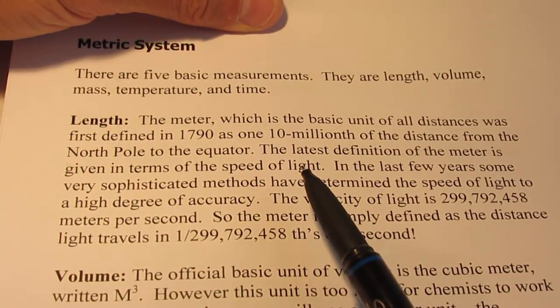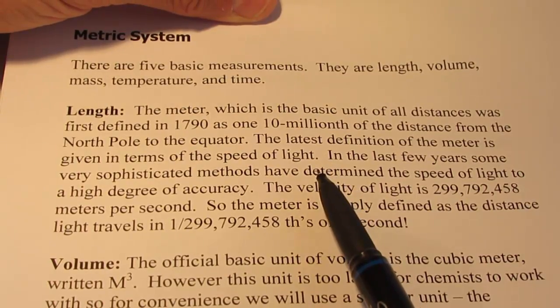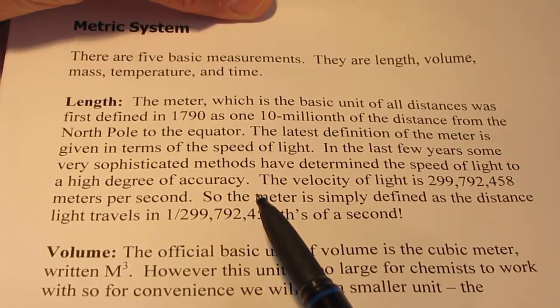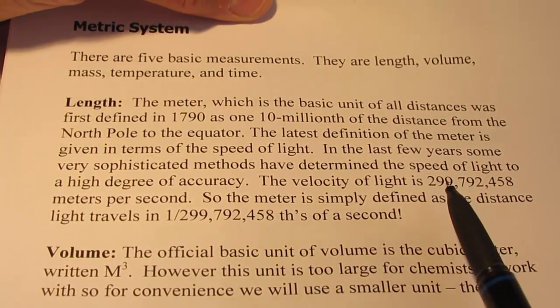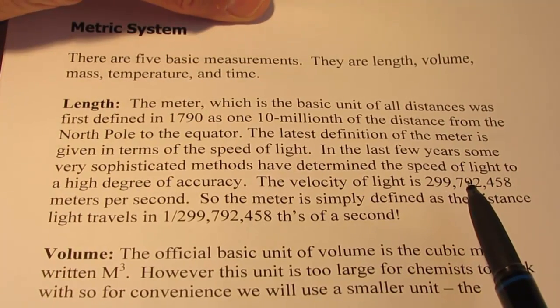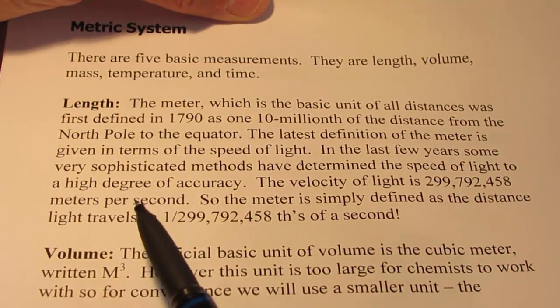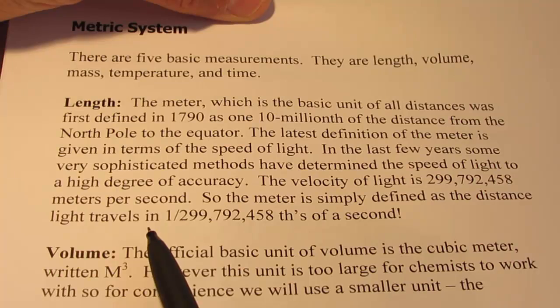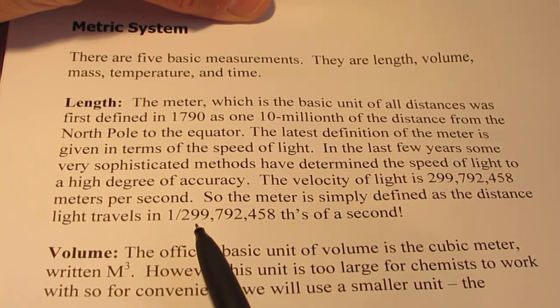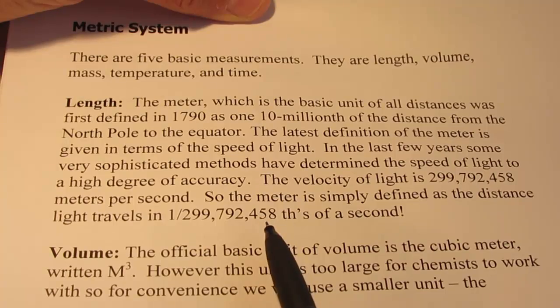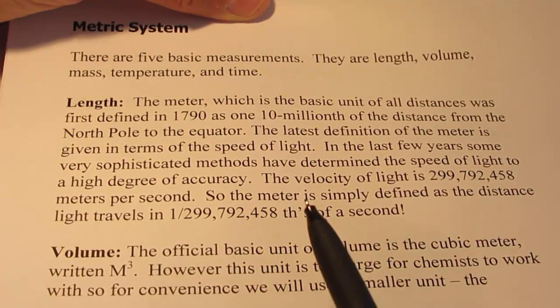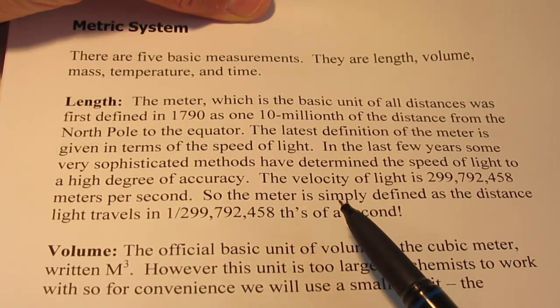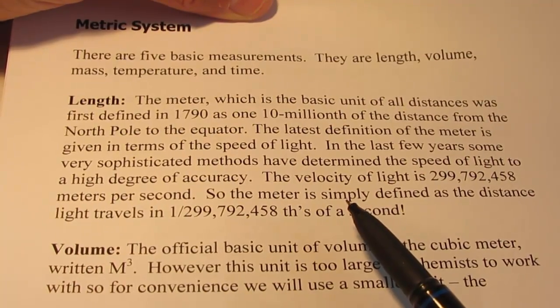The latest definition of the meter is given in terms of the speed of light. In the last few years, some very sophisticated methods have determined the speed of light to a very high degree of accuracy. It turns out the speed of light is 299,792,458 meters per second. So the meter is simply defined as the distance light travels in one 299,792,458th of a second. It doesn't change the length of a meter at all. A meter is a little bit longer than the familiar yard that you might be used to using.